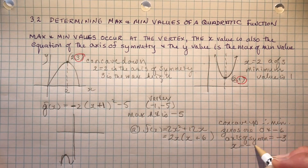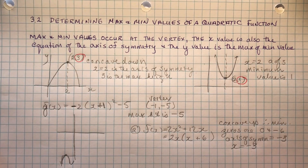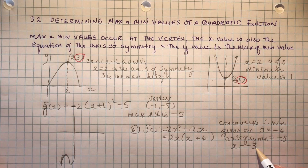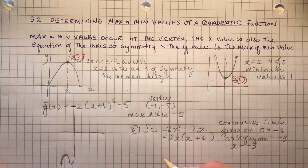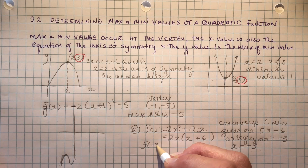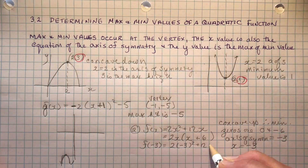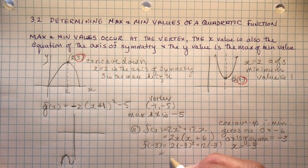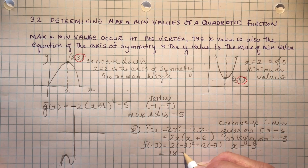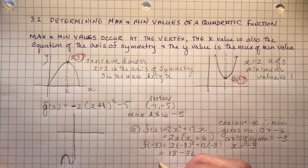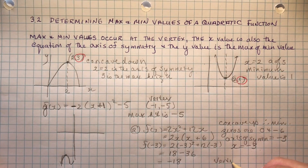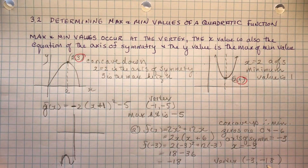Now if I want to know what the minimum value is, I need to evaluate the function when x is minus 3. So f(−3) equals 2 times (−3) squared plus 12 times (−3). That gives me 9 times 2 is 18, minus 36, and I get negative 18. So the vertex is (−3, −18) and the minimum value is −18.